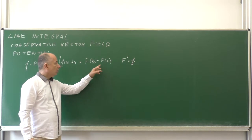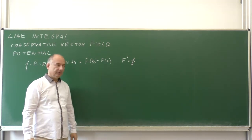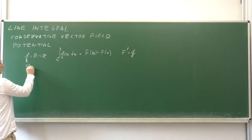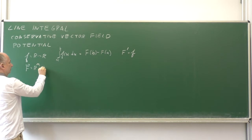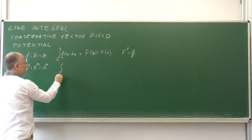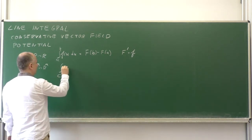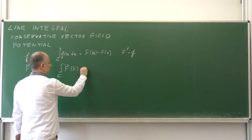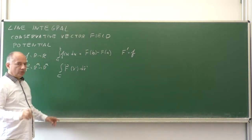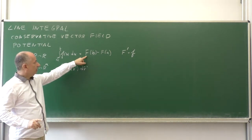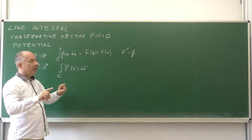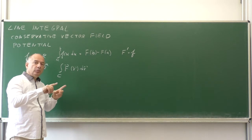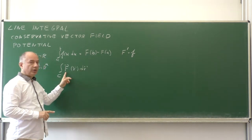We are always happy when we find the antiderivative. Now the question is: if we have some vector field F from R^n to R^n and we consider the line integral over curve C of this vector field F — note that capital F here for the vector field is different from capital F used for the antiderivative above.